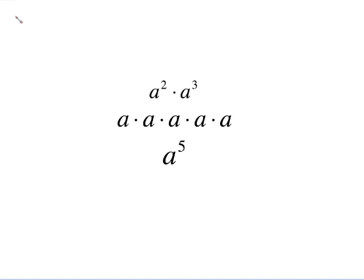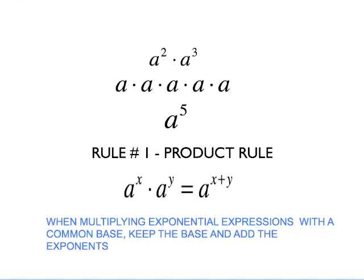Now what that gives me is a total of five a's all being multiplied together, and we can write that in a shorthand form as a to the fifth. Notice all we really did was take these two a's, take these three a's that we wrote out, and we did a total by adding the two and the three together.